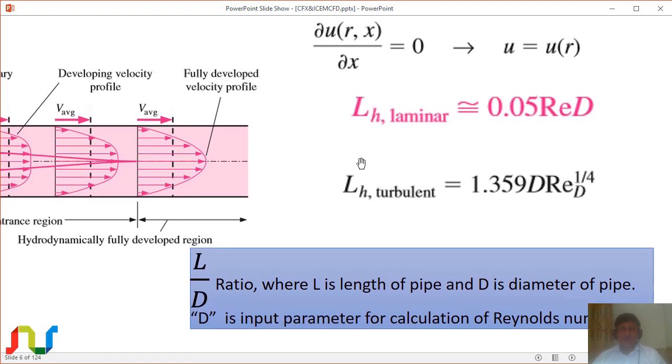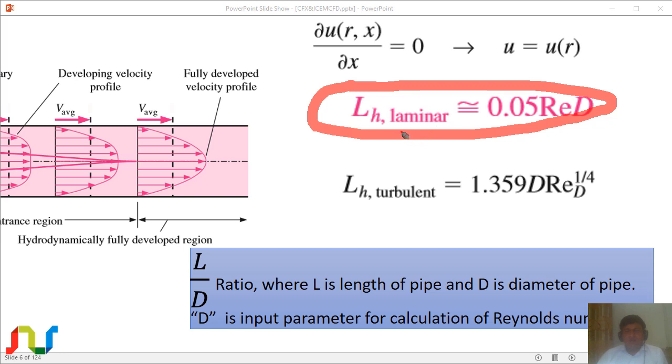We have empirical formulas from data. For laminar flow, entrance length is L_entrance = 0.05 × Re × D, and for turbulent flow, L_entrance = 1.359 × D × Re^(1/4). For laminar flow, the flow is fully developed very soon as it enters, but for turbulent case it takes more distance to become fully developed.